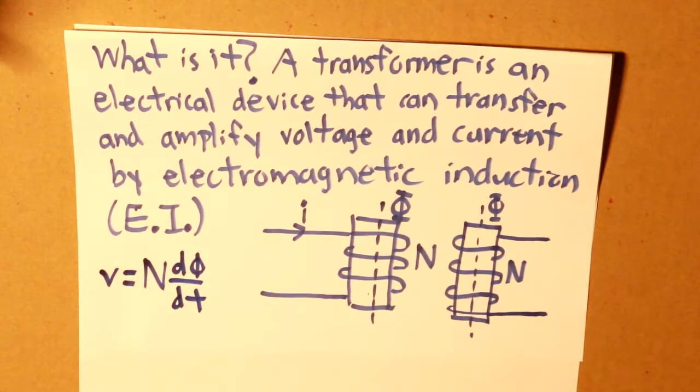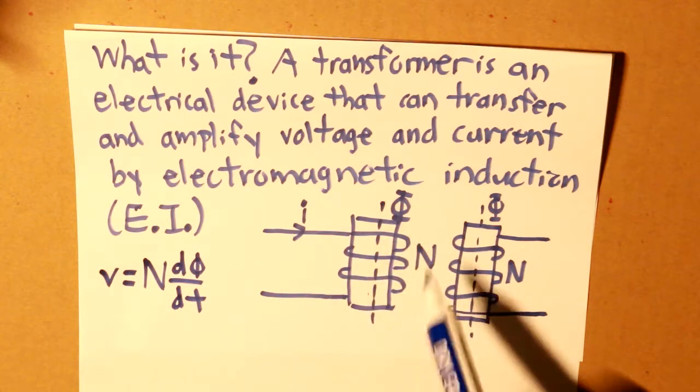Therefore in a transformer, the voltage is always in AC because that would create a change in the flux and that would have voltage produced.